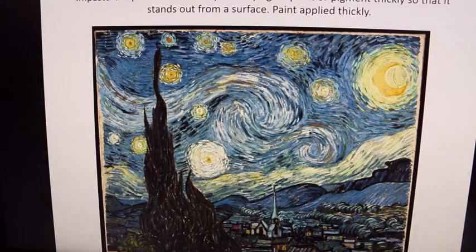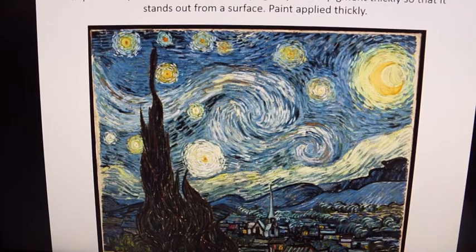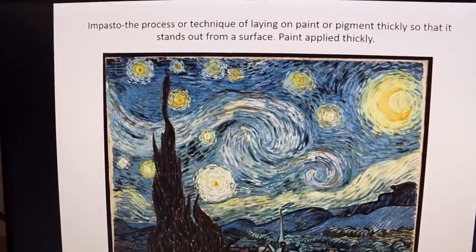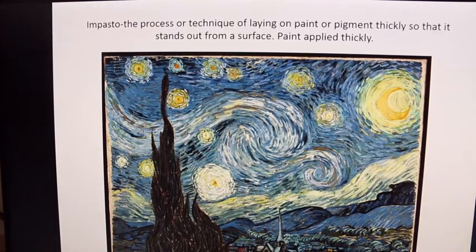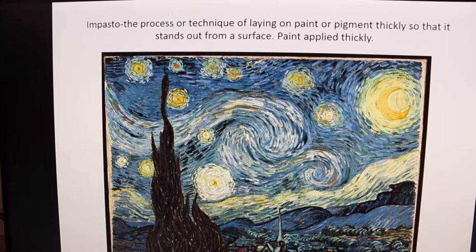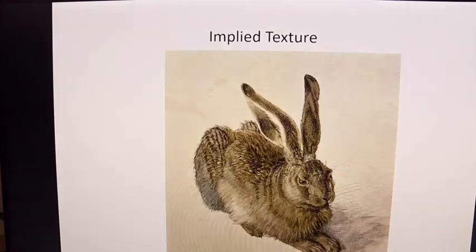There can also be actual texture in a painting if you apply paint very thickly. This technique is called impasto. One of the most famous people for this was Vincent van Gogh — as you can see in Starry Night, you can almost see the texture even in this reproduction. It was very thickly applied and stands out from the surface; it was essentially his signature.